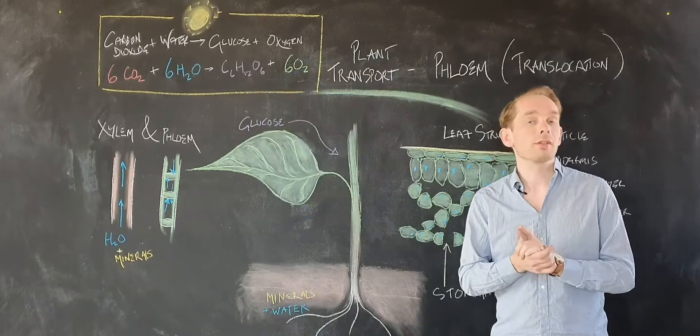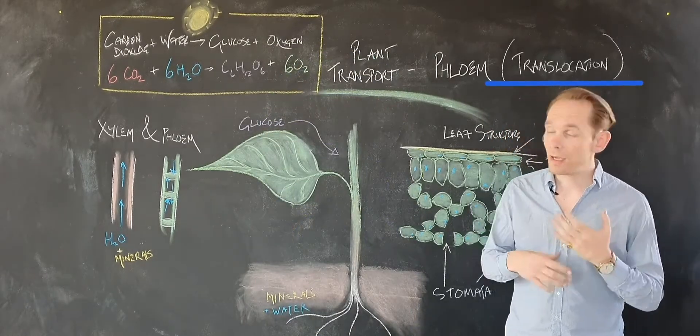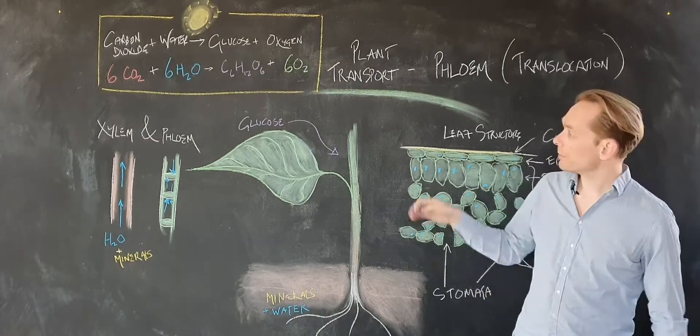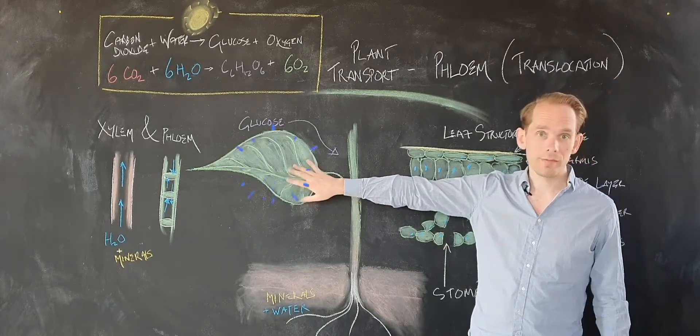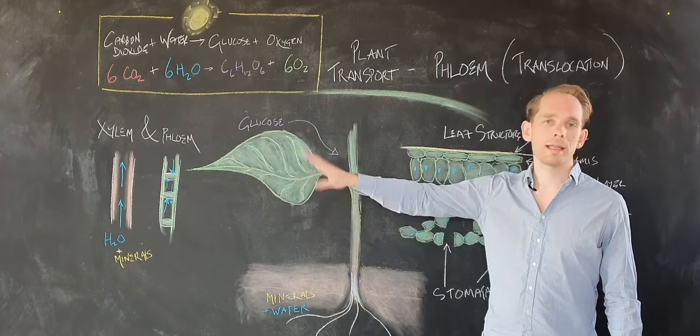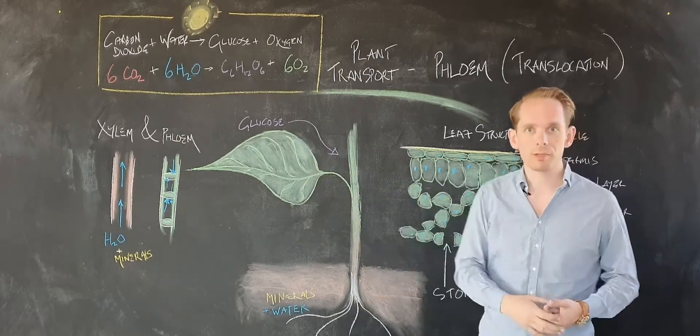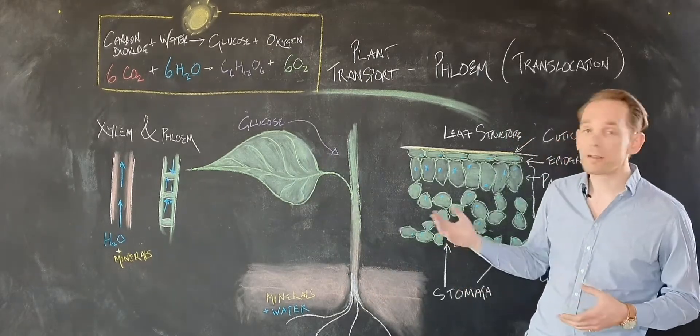Hello, this video is on the topic of translocation. That is, when plants make glucose in their leaves for food, how do they get that glucose to everywhere else in the plant that also needs it for respiration?